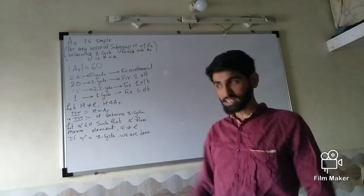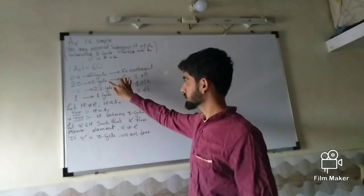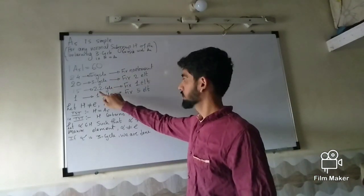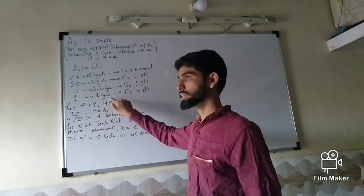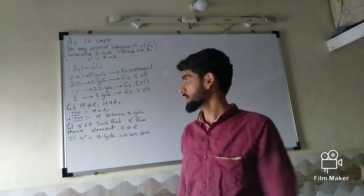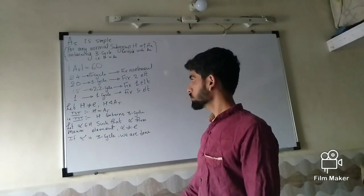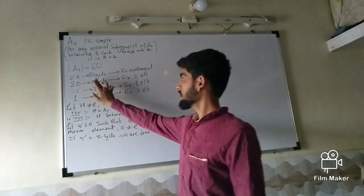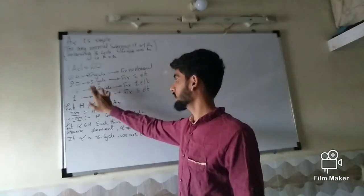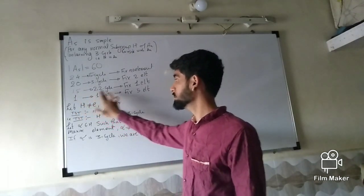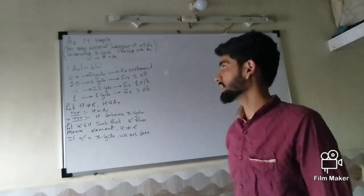These 60 elements are of the following kinds: 5-cycles, 3-cycles, (2,2)-cycles, and 1-cycles. Because they are even permutations, there are 24 five-cycles, 20 three-cycles, 15 (2,2)-cycles, and 1 identity (one-cycle).